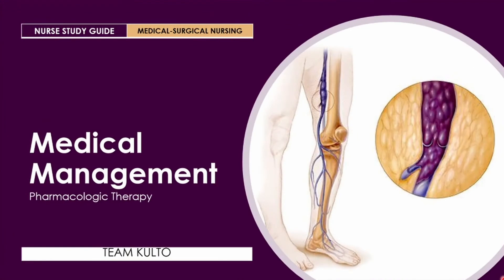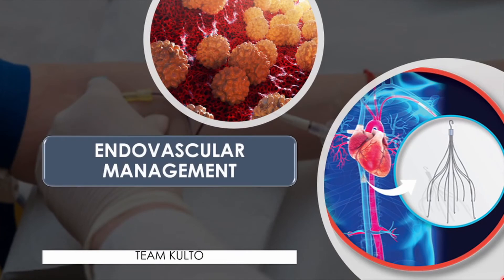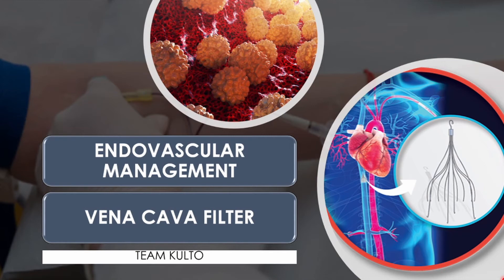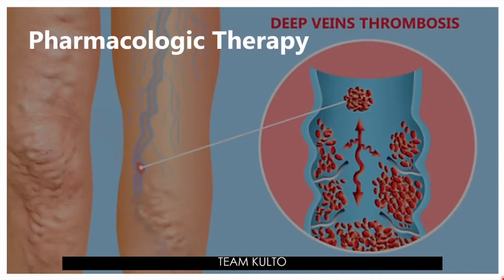The objectives for treatment of DVT are to prevent thrombus from growing and fragmenting, prevent recurrent thromboemboli, and prevent post-thrombotic syndrome. Endovascular management is necessary for DVT when anticoagulant or thrombolytic therapy is contraindicated, when the danger of pulmonary embolism is extreme, or when venous drainage is so severely compromised that permanent damage to the extremity is likely. A vena cava filter may be placed at the time of thrombectomy — this filter traps late emboli and prevents pulmonary emboli.